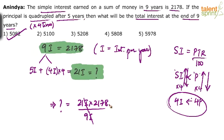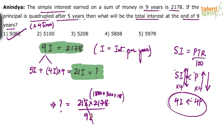For mental calculation: 2178 can be split as 1800 plus 360 plus 18. All are multiples of 9. Dividing each by 9: 9 goes 200 times into 1800, 40 times into 360, and 2 times into 18. So 2178 divided by 9 equals 242.